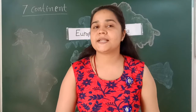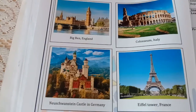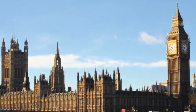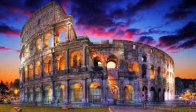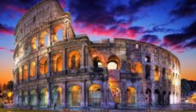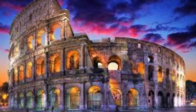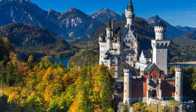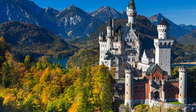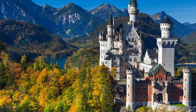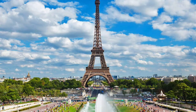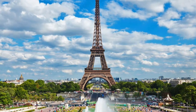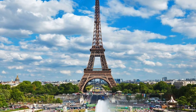Now we will see some famous places of Europe. The first place is Big Ben, which is in England. The second is the Colosseum, which is in Italy — how beautiful! The third is Neuschwanstein Castle in Germany, which is a fairy-tale castle. And then there is the Eiffel Tower, which is in France and is the world's most famous tall tower.